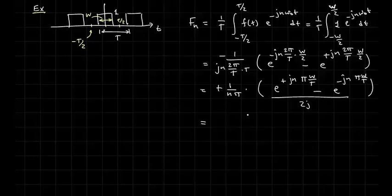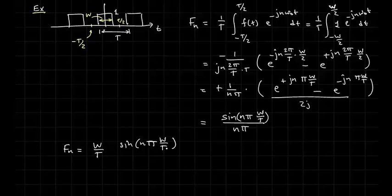Which yields, we see a sine here, so we have a sine of N pi W over T divided by N pi. Let's rewrite that as W over T times sine of N pi W over T divided by N pi W over T.